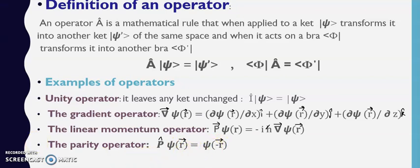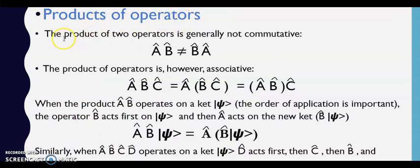Product of operators. The product of two operators is generally not commutative. Jo do product hota hai woh ho sakta hai ki commutative nahi ho. A B is not equal to B A. The product of operators is however associative. Associative hota hai par commutative nahi hota hai.